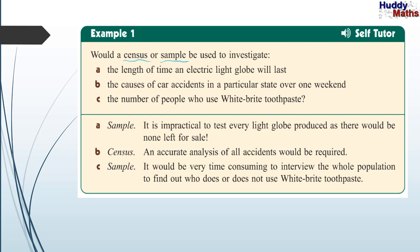Here's a question: would a census or a sample be used to investigate the length of time an electric light globe will last? The causes of accidents in a particular state over one weekend? And the number of people who use White Bright toothpaste? For the first one, you can't test every light globe — you burn them out — so you would use a sample. For car accidents, yes you could use a census because it's achievable to measure all of them. For the toothpaste, you take a sample to see how popular it was.